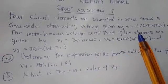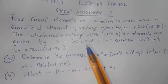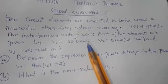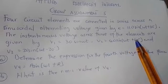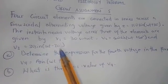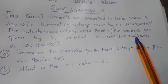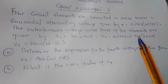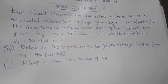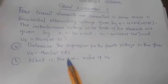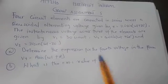The instantaneous voltage across three of the elements are given by V1 = 30 sin(ωt), V2 = 60 sin(ωt + 60°), and V3 = 30 sin(ωt - 30°). The phase angle — when it is positive it means it's leading, when it's negative it means lagging.